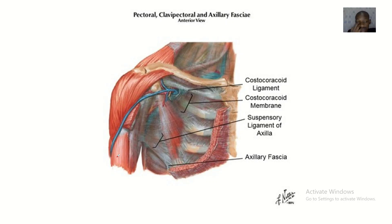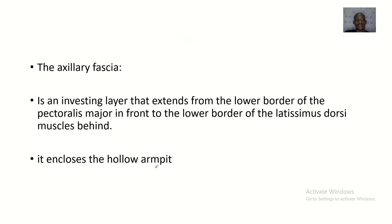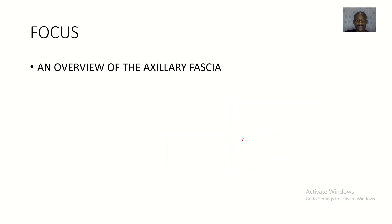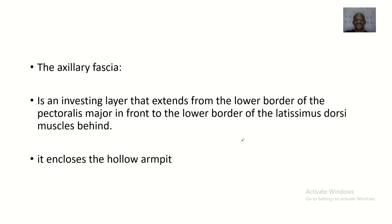We're having a lecture about the axillary fascia. We'll be doing an overview — or better still, the anatomy of the axillary fascia. Basically, the axillary fascia is an investing layer that extends from the lower border of the pectoralis major in front to the lower border of the latissimus dorsi muscles behind.